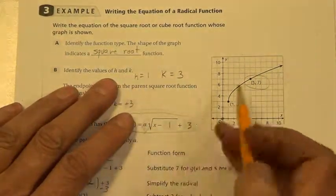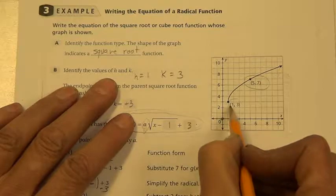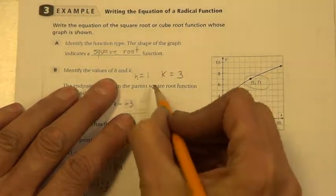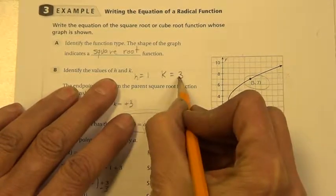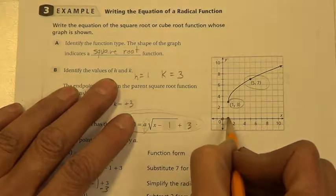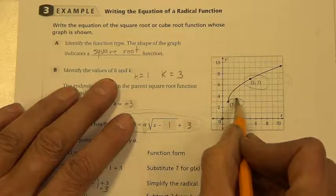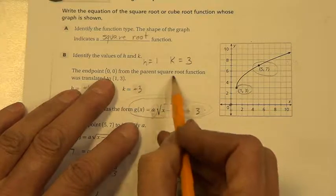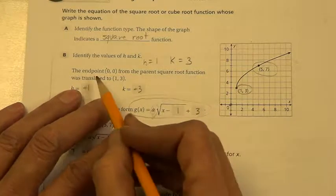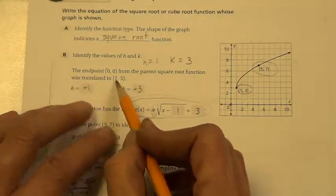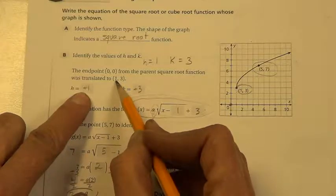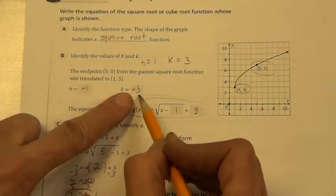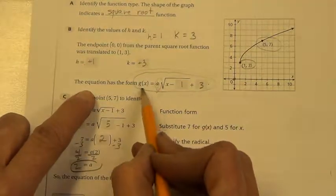Identify the values of h and k. I can find that right here. This point means that my h is 1 and my k is 3 because that shows me where my vertex is. You take the end point from the parent root function and it was translated to the right one and up 3. That's how we get h is 1, k is 3. Now we put that in the equation. So we have g of x, a, square root, x minus 1, plus 3.